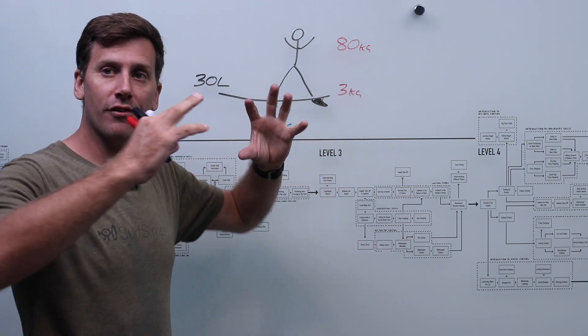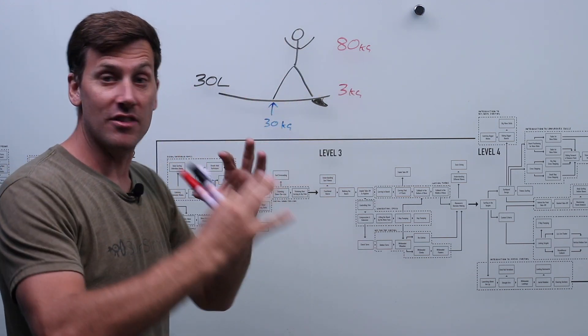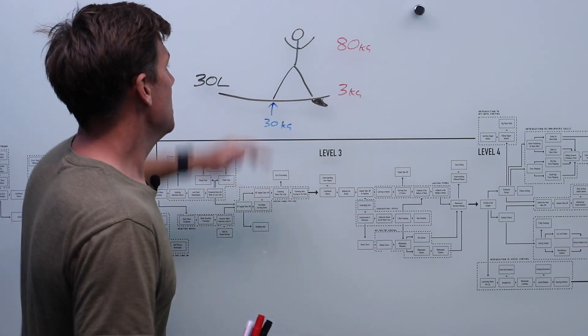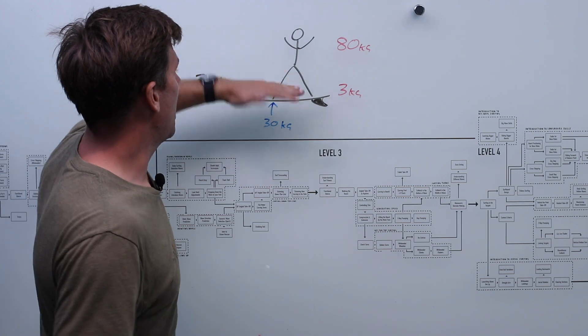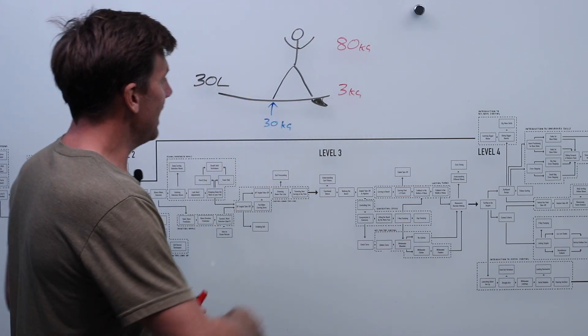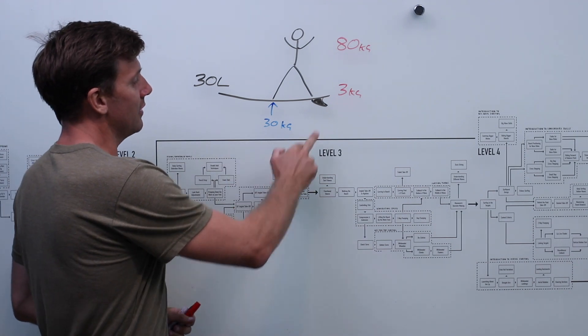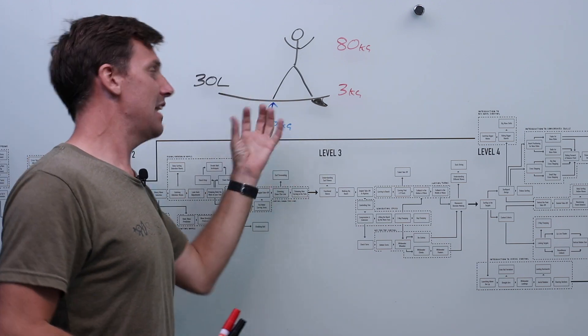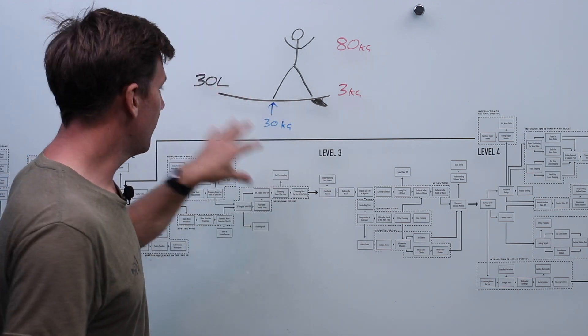If this was 80 kilos of lead, say, which is very, very dense, then the whole thing would just sink to the bottom of the ocean. But it's not. We're about the same density as water. But what does happen is we do still have this 30 kilos of positive buoyancy, 300 newtons of flotation from the surfboard.